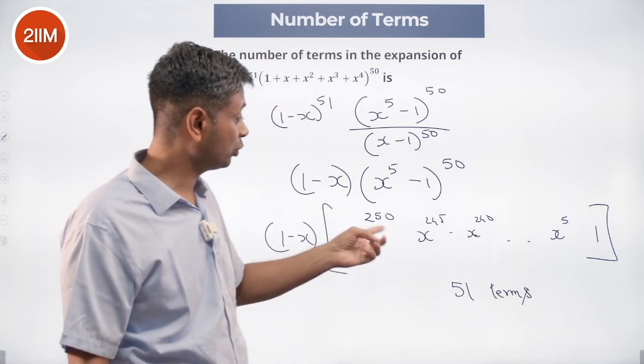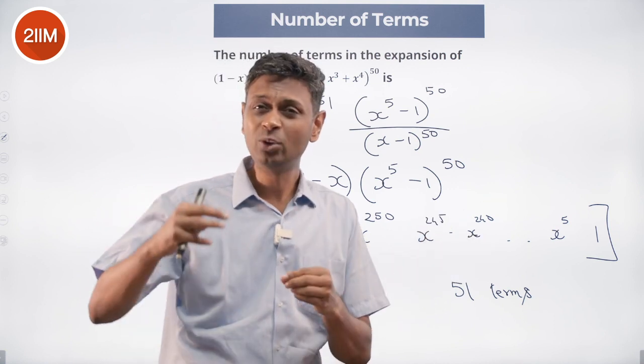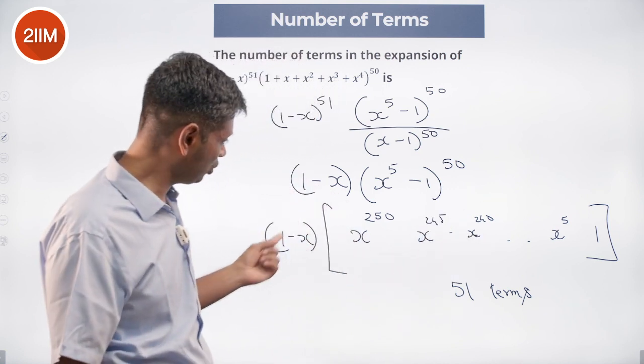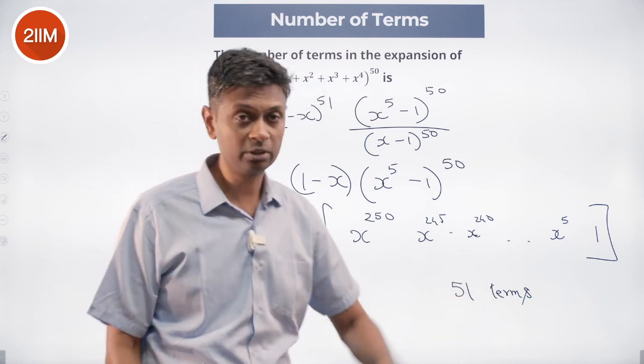These are all steps of 5 and then I'm adding one more x. There will be x power 251, 246, 241, all the way till x. This into this will give me 51 terms. This into this will give me 51 terms.